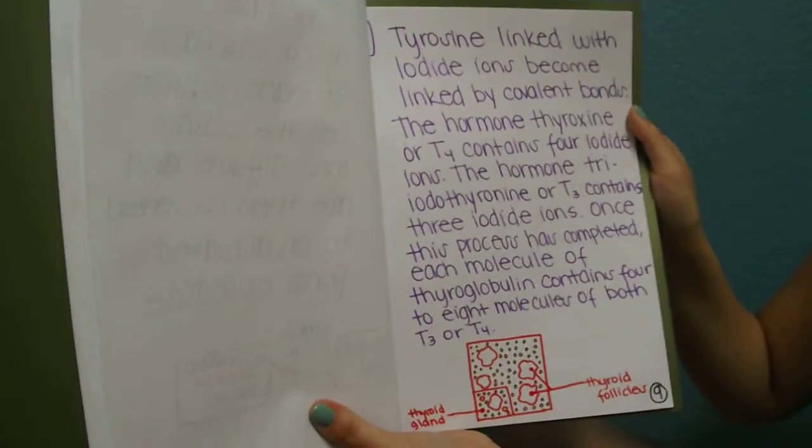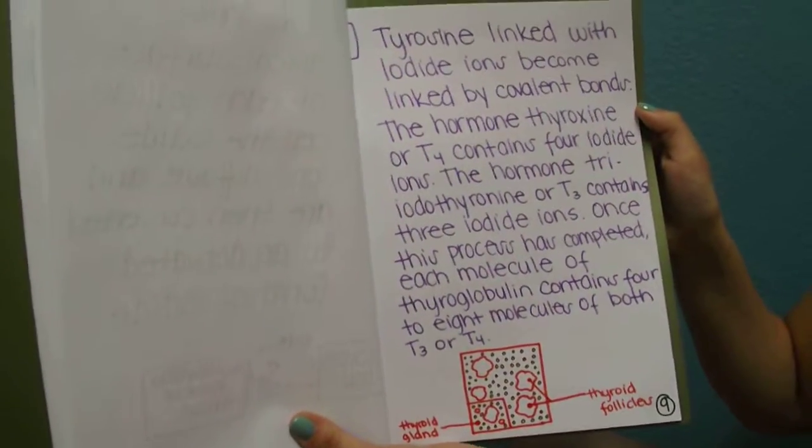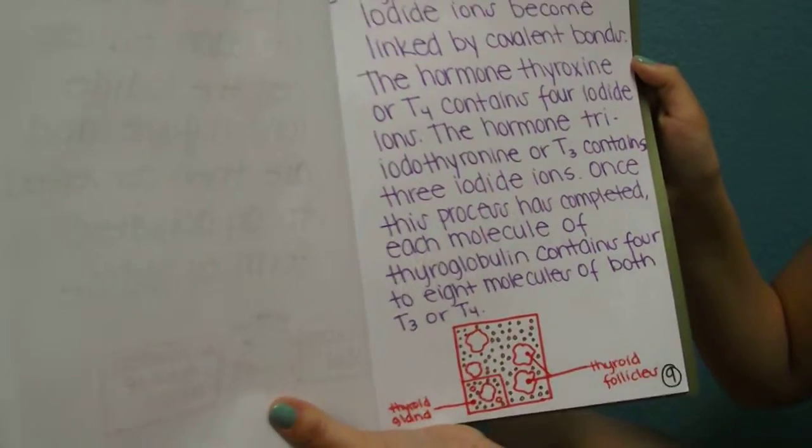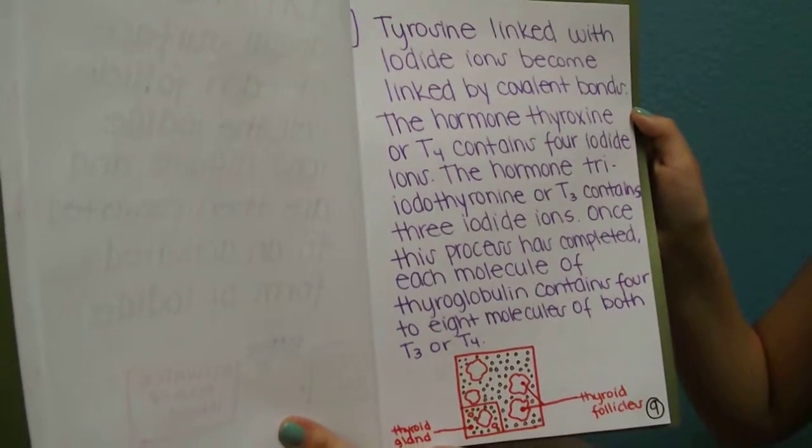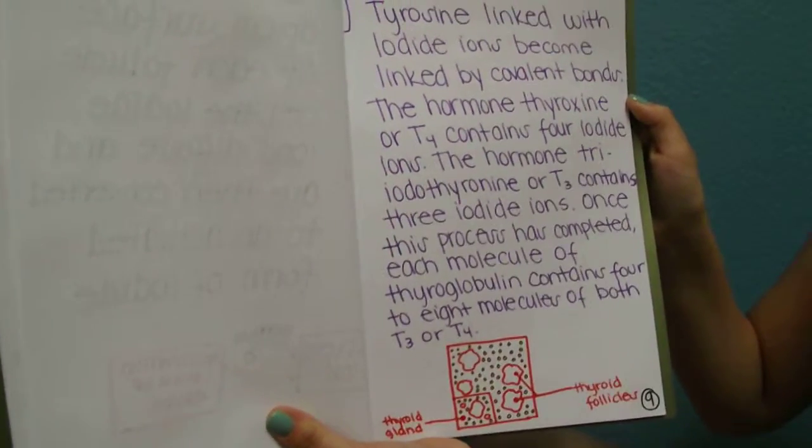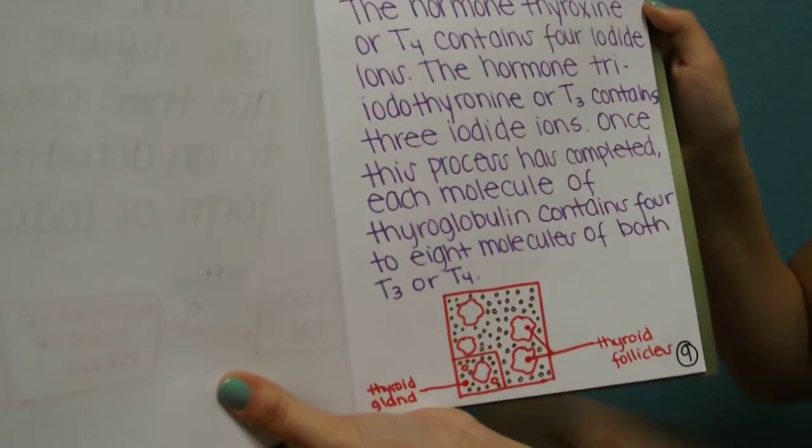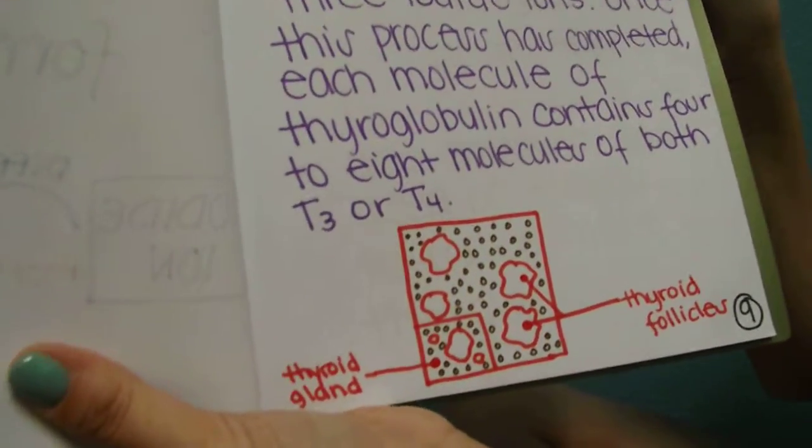Step three is tyrosine linked with iodine ions become linked by covalent bonds. The hormone thyroxine, or T4, contains four iodine ions. The hormone triiodothyronine, or T3, contains three iodine ions. Once this process has completed, each molecule of thyroglobulin contains four to eight molecules of both T3 or T4.